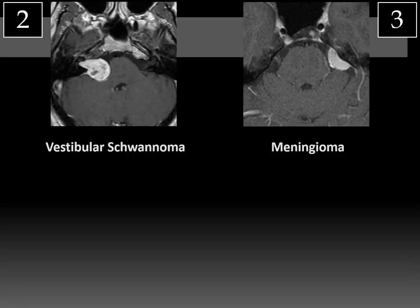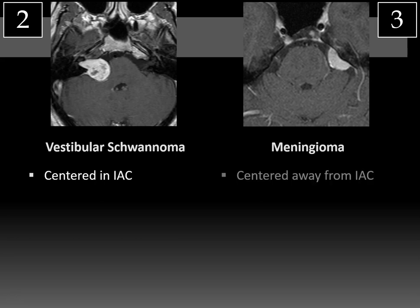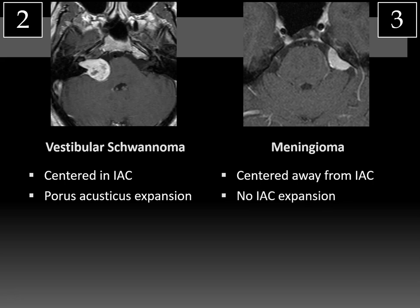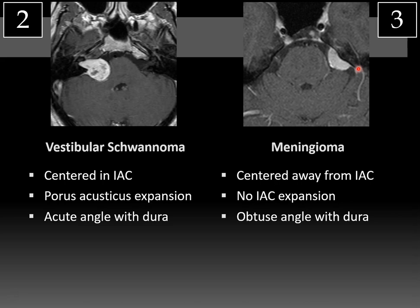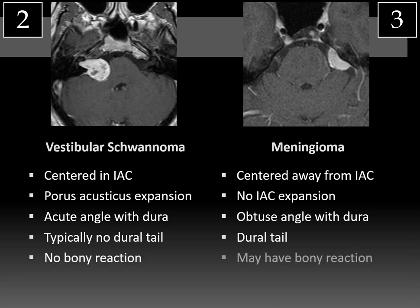Cases 2 and 3 — the vestibular schwannoma and the meningioma at the CP angle. Schwannomas tend to be centered in the IAC, whereas meningiomas are centered away from it. Schwannomas expand the porous acousticus — the medial aspect of the internal auditory canal — whereas meningiomas, even if they extend into the IAC, will not typically expand it. Schwannomas form an acute angle with the dura overlying the petrous temporal bone; meningiomas form a more obtuse angle. Schwannomas typically lack a dural tail, while meningiomas more commonly have dural tail enhancement. Schwannomas have no bony reaction; meningiomas may show hyperostosis or erosion.